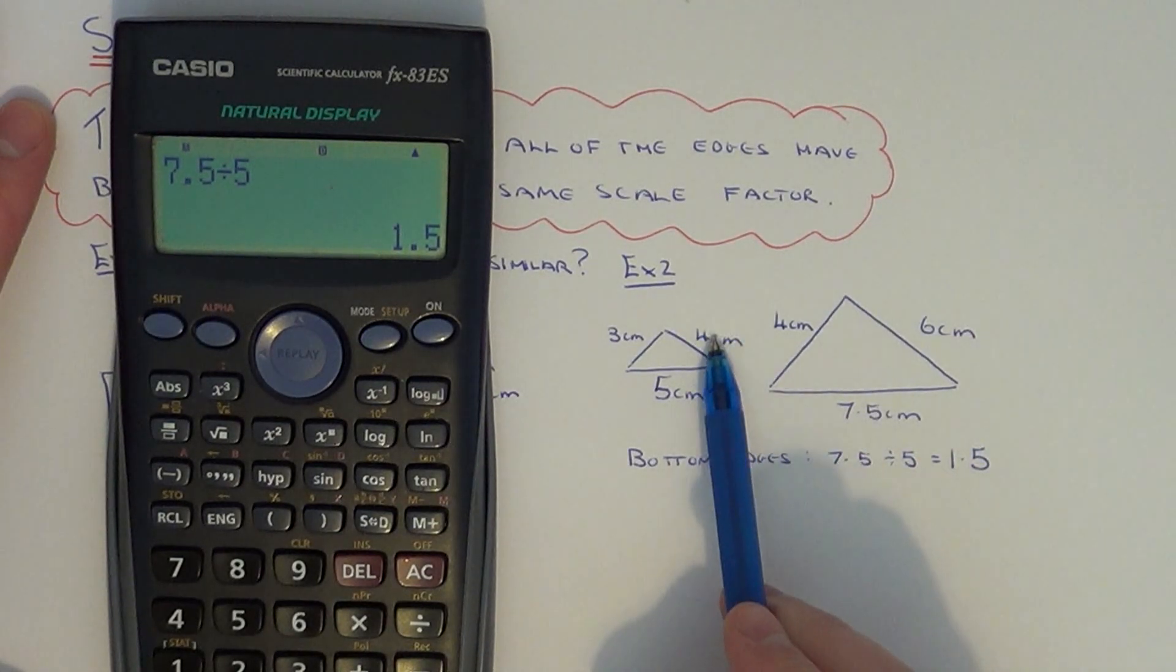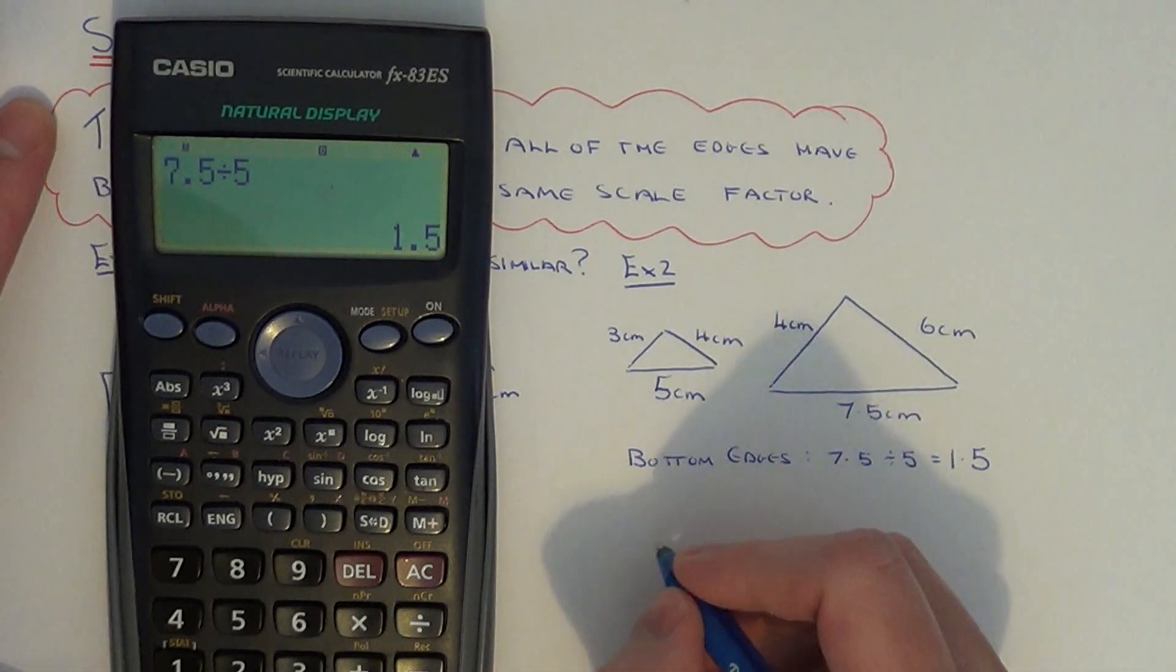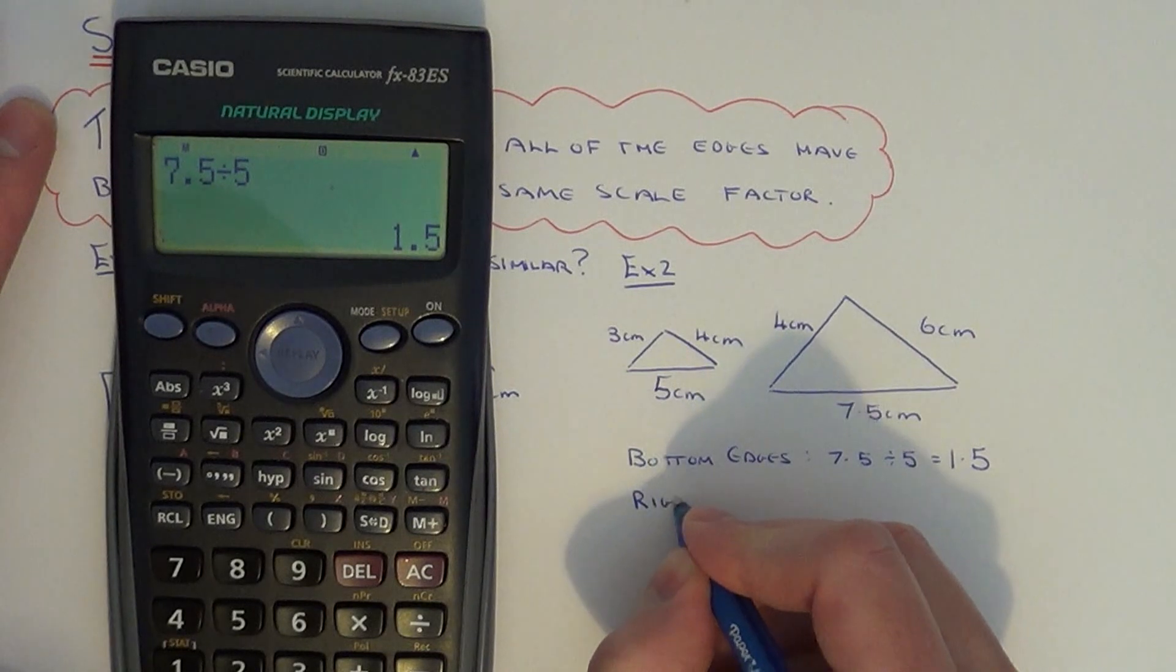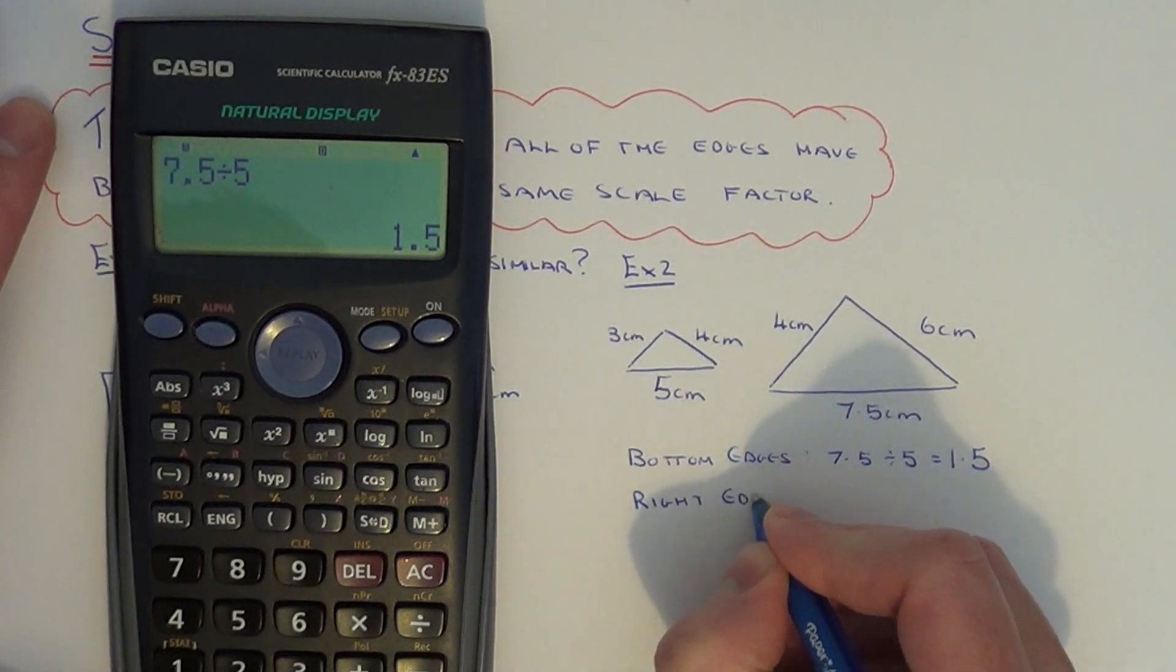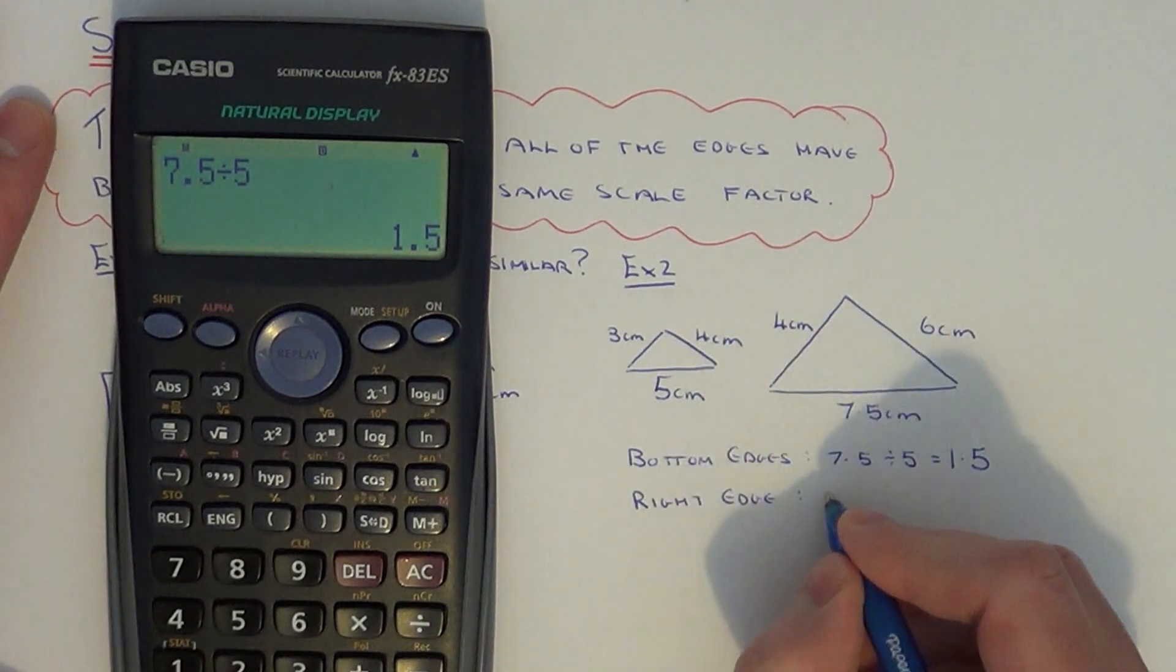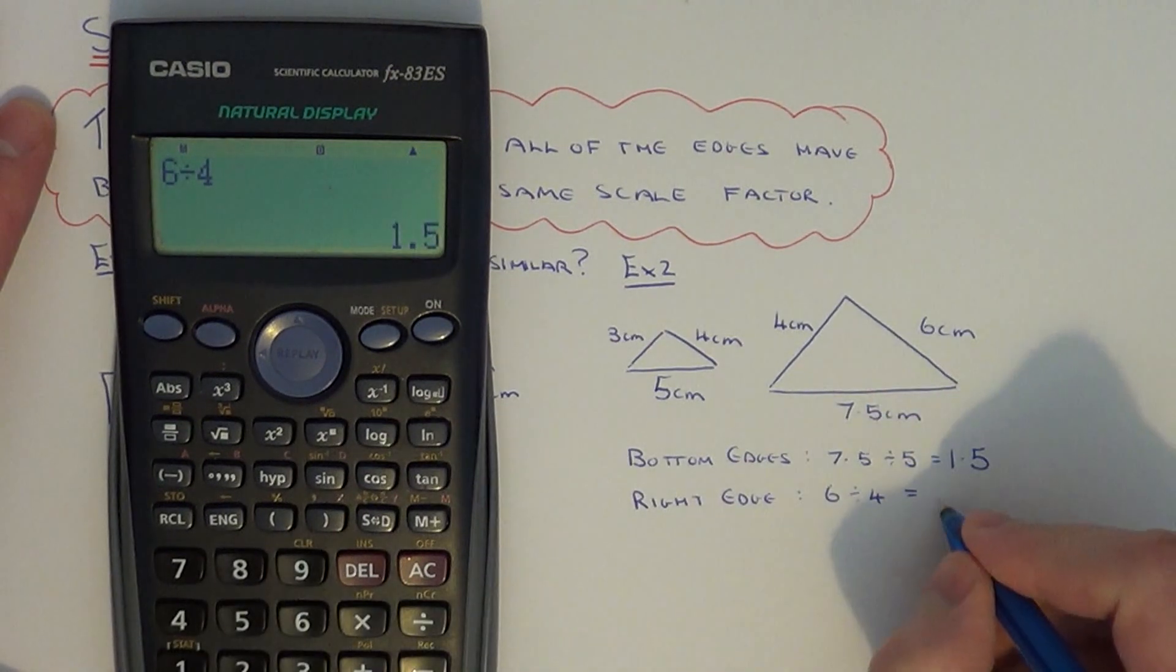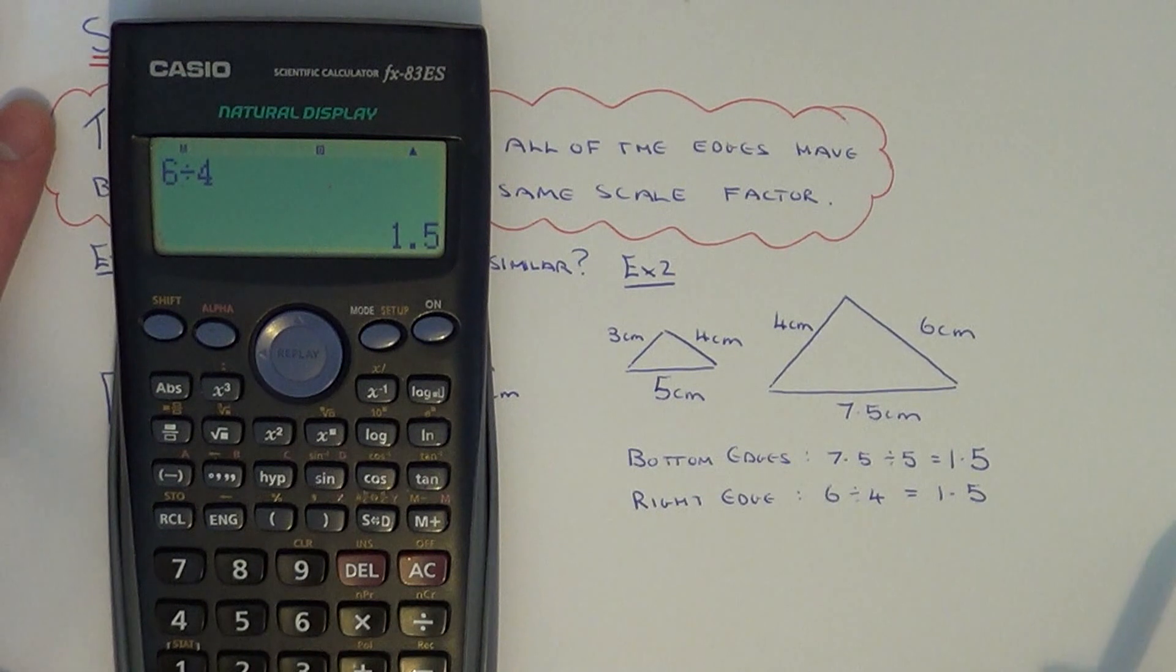Let's repeat this for the other edges. Let's do the right hand edge of each triangle. This time we do 6 divided by 4, which gives us a scale factor of 1.5.